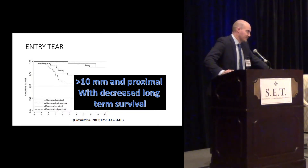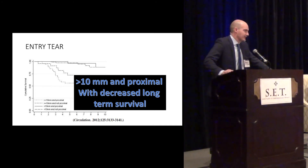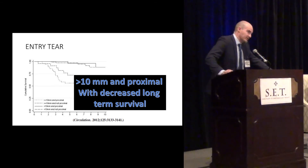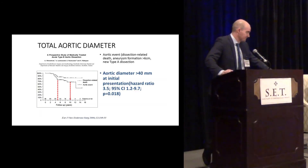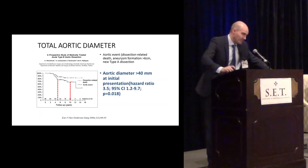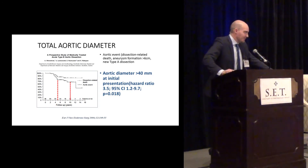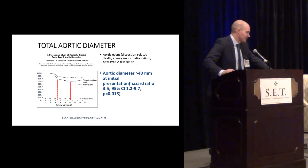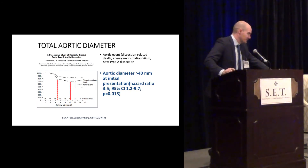The entry tear has also been found to be very important. If you have a larger entry tear — greater than 10 millimeters — and this proximal entry tear, those patients tend to have lower survival down the road compared to groups with a smaller entry tear further distally. The total aortic diameter has been found to be very important as well, with a higher number of aortic events in patients presenting with an aneurysm greater than 4 centimeters at initial presentation — anywhere from initial presentation to around six weeks.